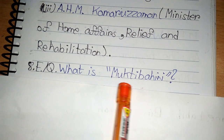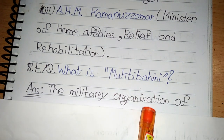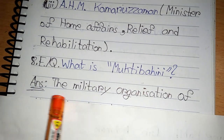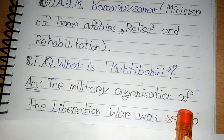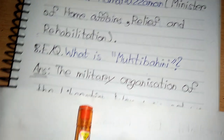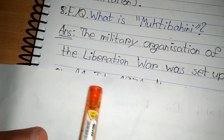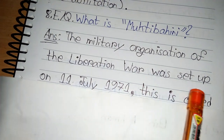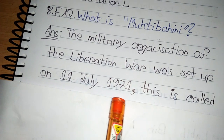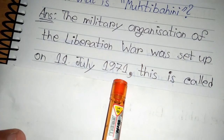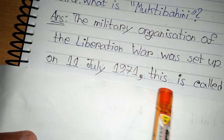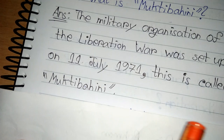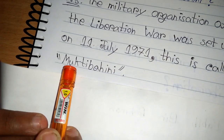Next question: What is Mukti Bahini? The military organization of the liberation war was set up on 11 July 1971. This is called Mukti Bahini.